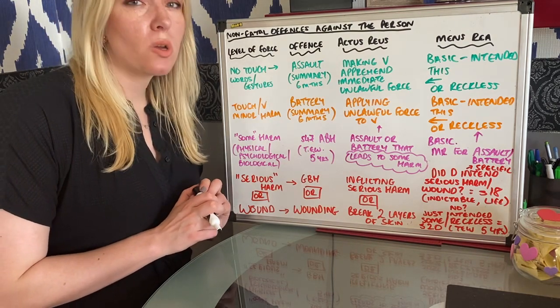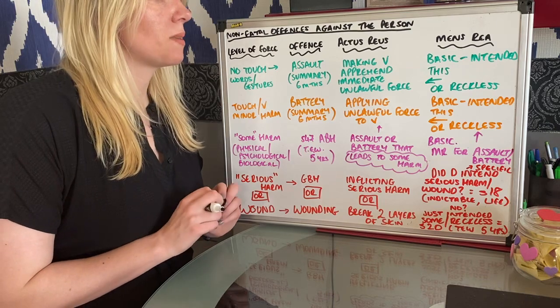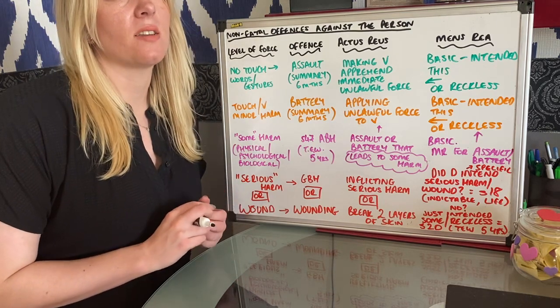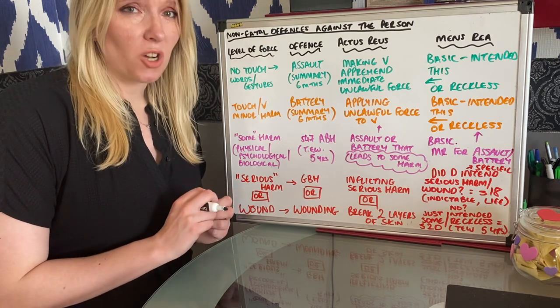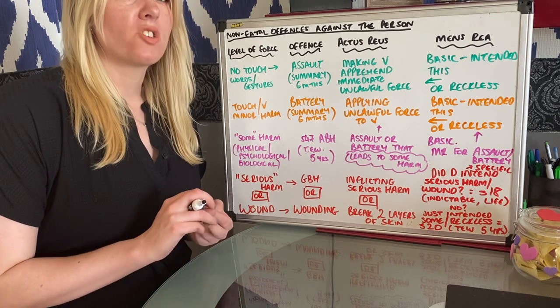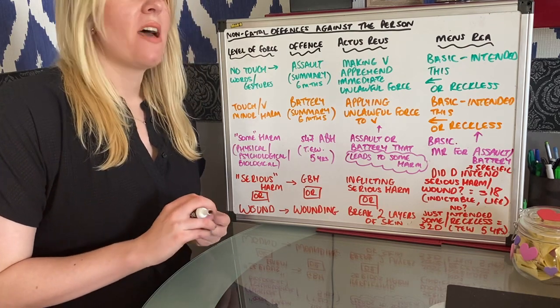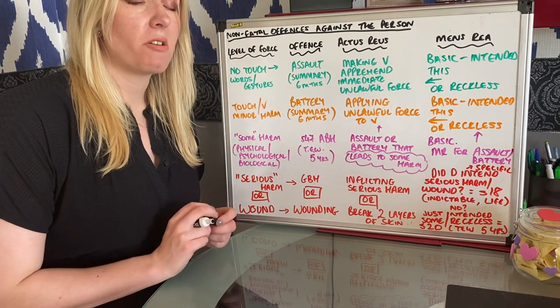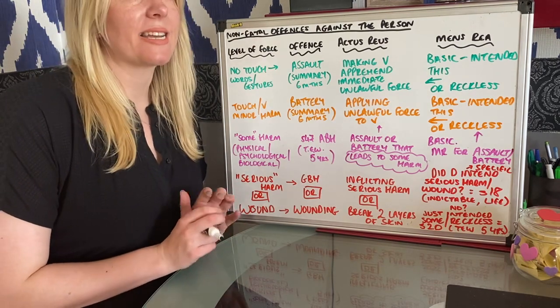A typical A or two question on non-fatals against the person will have a number of incidents happening between a defendant and a victim, and your job is to correctly identify the offense that is maybe going on, describe the law in that area, explain each of the elements of that crime, and then apply them to the scenario. We sometimes hear of this called IDEA.